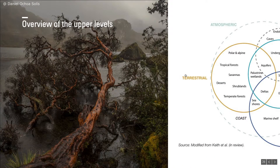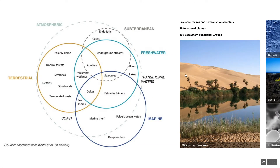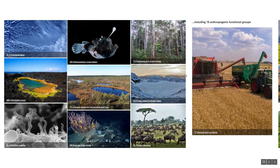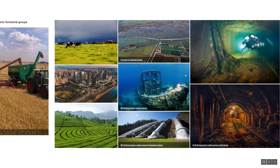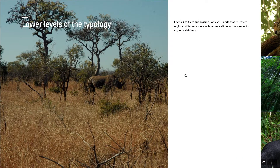The three upper levels of the typology have been fully developed in consultation with global experts using a top-down approach. There are five core realms, six transitional realms, 25 biomes, and 108 ecosystem functional groups in the three upper levels of the typology. This includes six anthropogenic biomes and 15 anthropogenic functional groups. The three lower levels are being developed by integration of existing regional classifications that are linked to the existing upper levels.